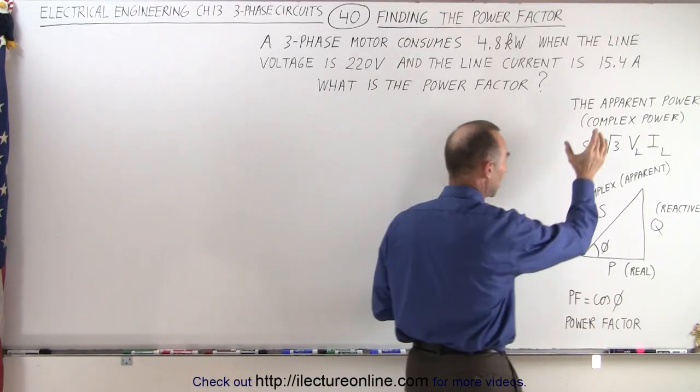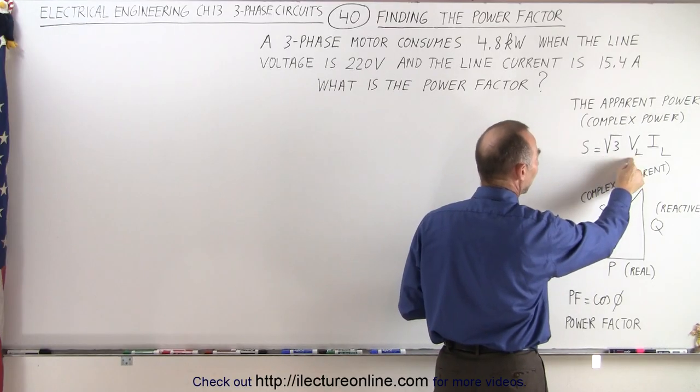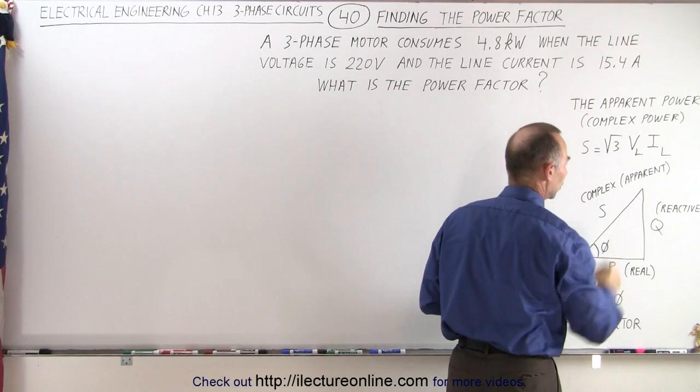And the apparent power, the complex power can be found by taking the square root of three times the line voltage times the line current.